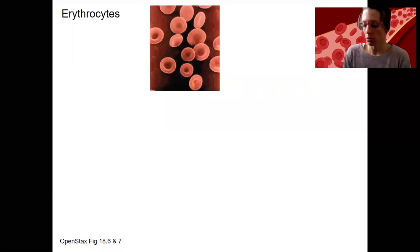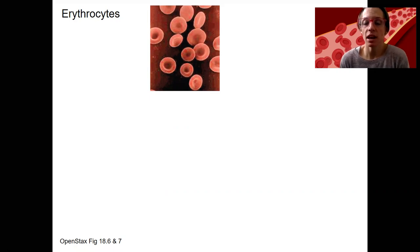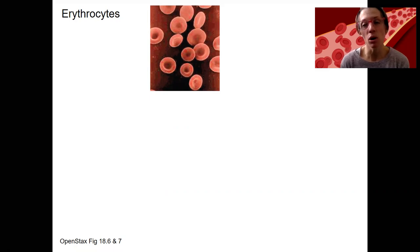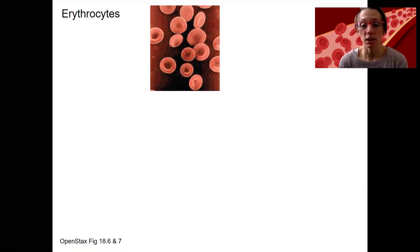Erythrocytes are red blood cells, and they're unique because they are very small compared to most cells, and they don't contain any organelles. They do contain important things. This small size allows them to fit through even the smallest capillaries in your body, which most cells couldn't get through. And their job is to carry gases throughout the body.